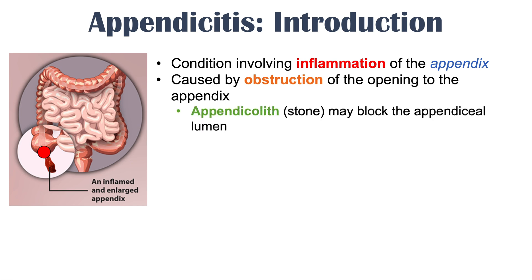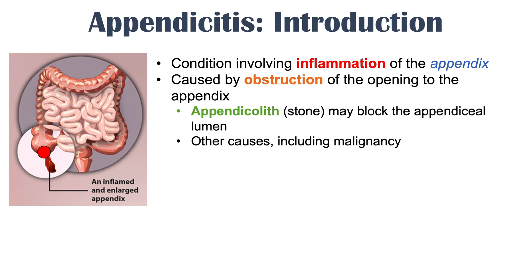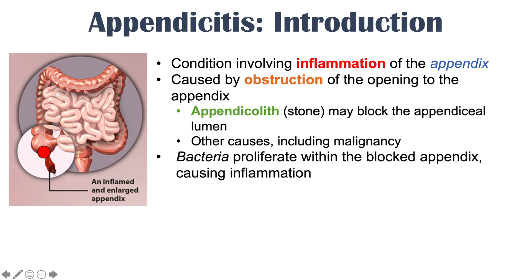Things that could block the opening include an appendicolith, which is a stone often formed from firm feces and minerals, which can block the appendiceal lumen. Other causes include malignancy, and in some cases the obstructive cause is not known. When the appendiceal lumen is blocked, bacteria within the appendix get trapped and start to proliferate and multiply, leading to inflammation and enlargement of the appendix.